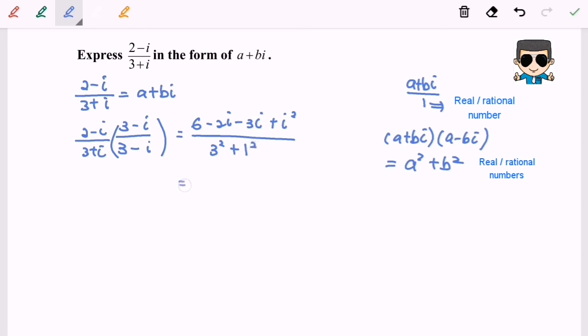So simplify: 6 minus 5i plus negative 1 (i squared is equal to negative 1) over 10.